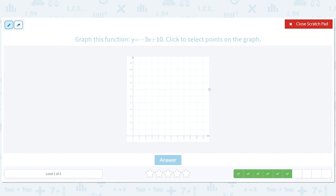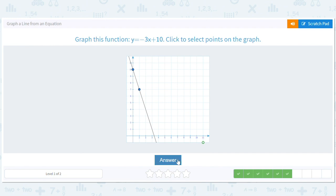We have negative three over one. So the run is one. The rise is negative three. We start at 10. One, one, two, three. And there we go.